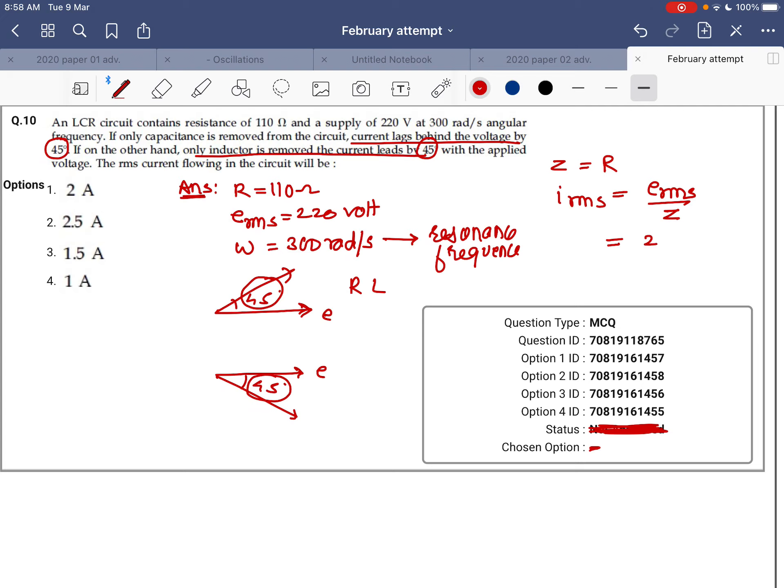So it will be 220 upon R, which is 110, giving us 2 amperes for I_RMS.